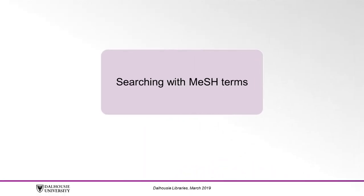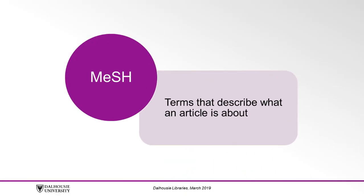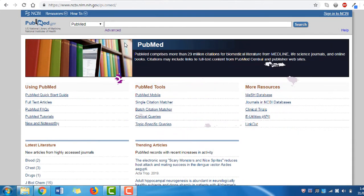Let's try the same search using the MeSH database. MeSH offers ways to control the number of citations retrieved and increases relevancy. MeSH terms are the agreed-upon terms indexers use to describe what each article is about, so you don't have to brainstorm every possible synonym for a word. You can find the MeSH database from the PubMed main page in the drop-down menu at the top of the screen.